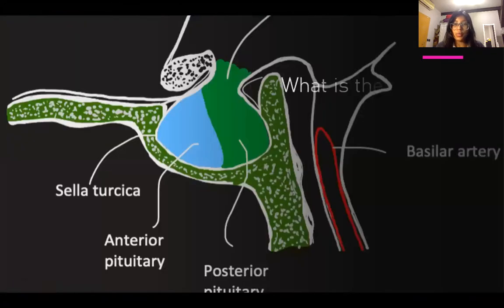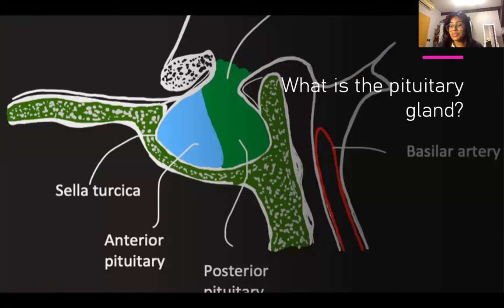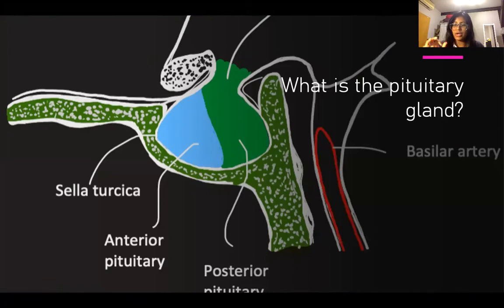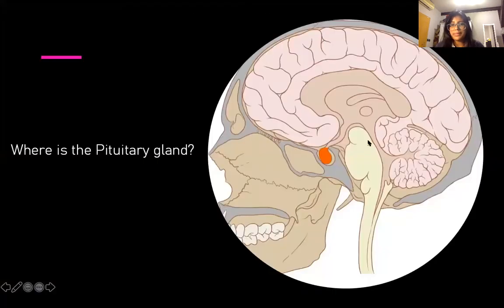First, talking about what is the pituitary gland. The pituitary gland is also known as hypophysis and it is a major gland of the endocrine system. It is located on the underside of the brain and is connected by the infundibulum or the pituitary stalk, which you can see right here. It is a pea-sized gland, so it's not very big — as compared to the brain it is quite a small organ.